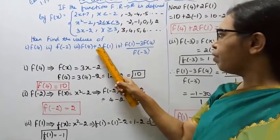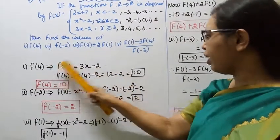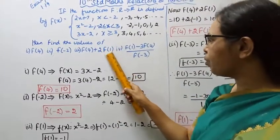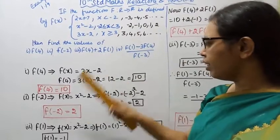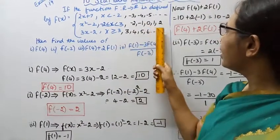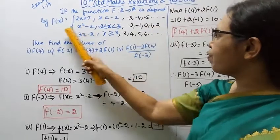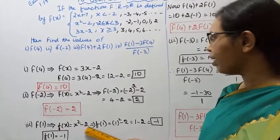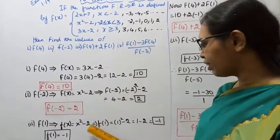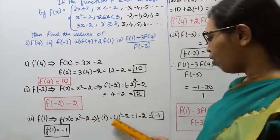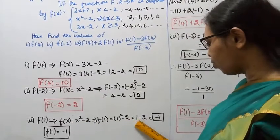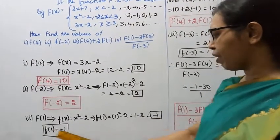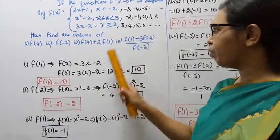f(4) plus 2 into f(1). f(4) is already 10. Now find f(1). For 1, f(x) equals x square minus 2. So f(1) equals 1 square minus 2, which equals 1 minus 2 equals minus 1. So f(1) equals minus 1.